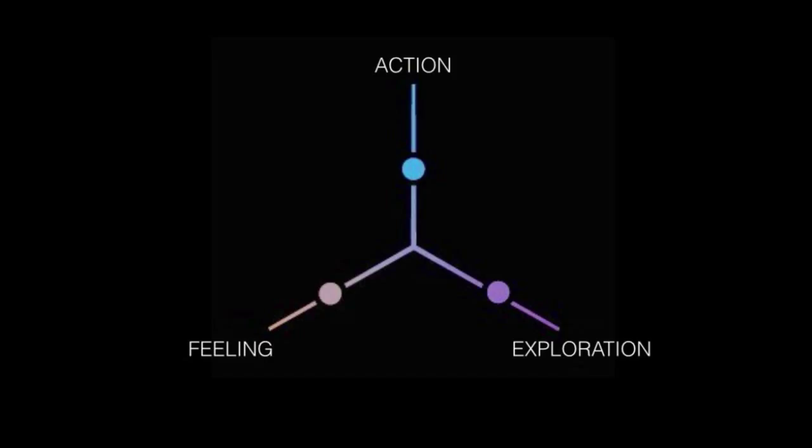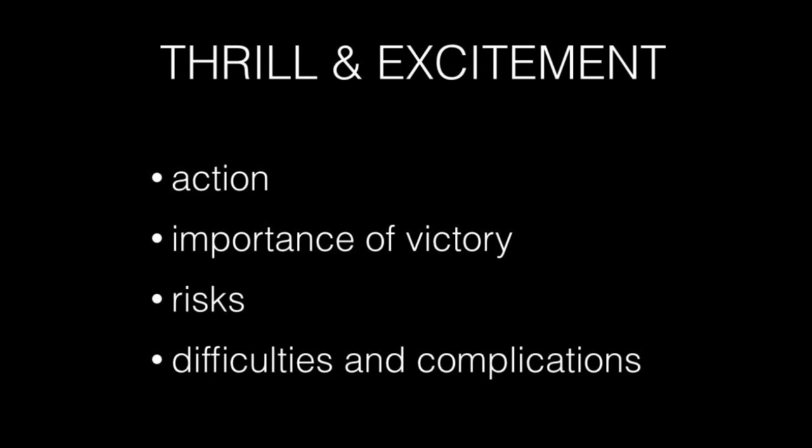What do we need to do to push the player forward along one of these axes? For the axis of action — the one that deals with thrill and excitement — the most basic thing is to really make her want to win. We need to create some kind of goal for the player and make her really feel how important winning is. The risks and the stakes have to be high, and the obstacles hard but still surmountable. And the difficulty of what has to be done should gradually increase.